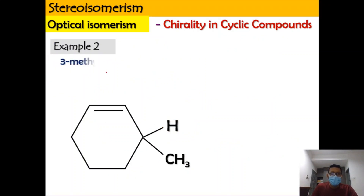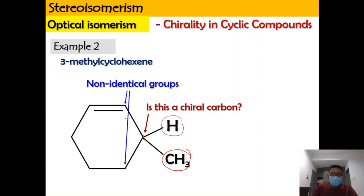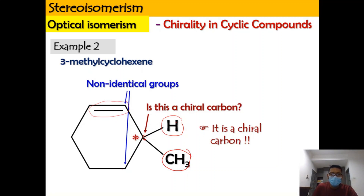Now looking at example two: 3-methylcyclohexane. We suspect whether this carbon is a chiral carbon. We know that H and CH3 are already different. Looking at the carbon chain in the cyclic compound in each direction, we can see they are not identical because one direction has a double bond and the other has a single bond. So the carbon is attached to four different groups and is a chiral carbon — label it with an asterisk.